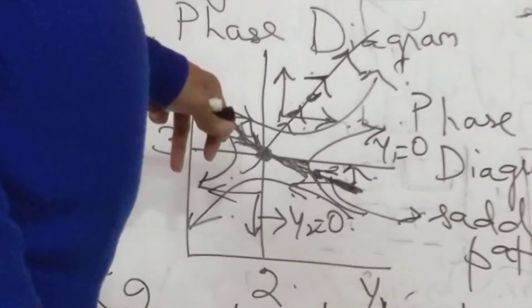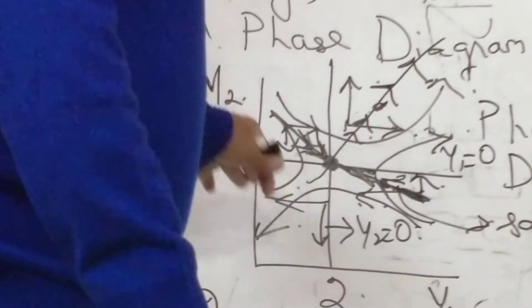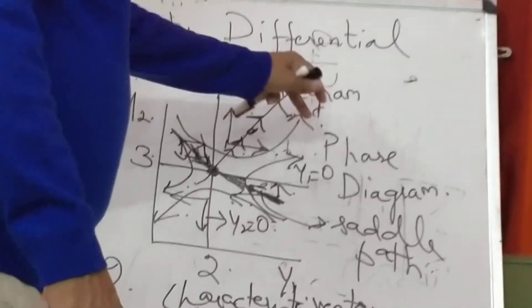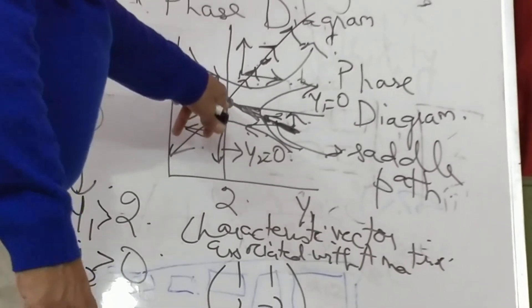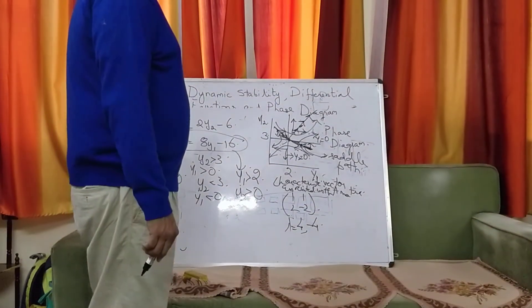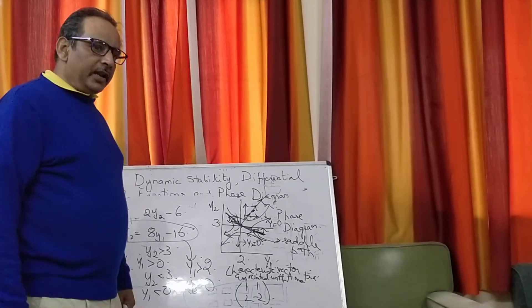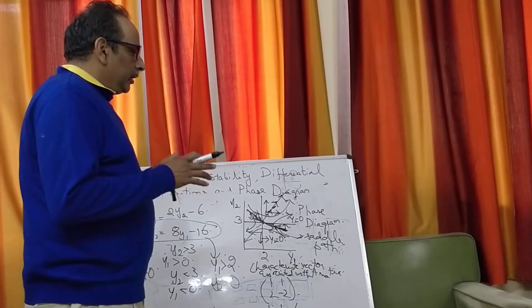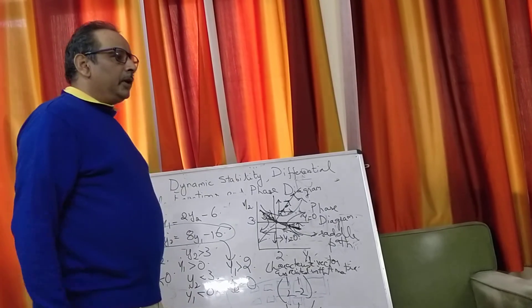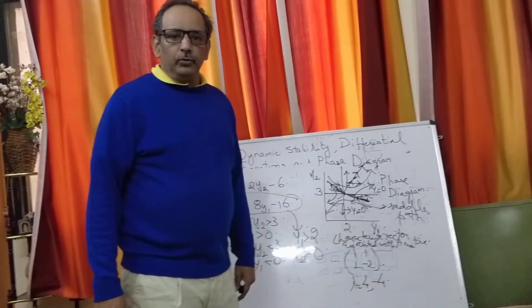We have seen that if you are anywhere else, the arrows show that you will be moving away from the equilibrium. It is only this saddle path which will take you to the equilibrium point. We will see its application when we study how money supply affects the exchange rate with sticky prices — the Dornbusch model of exchange rate overshooting. Thank you so much and see you next time.